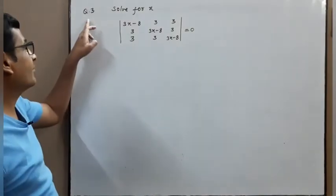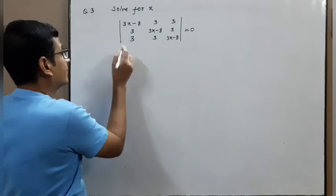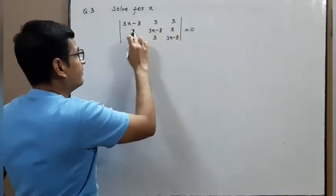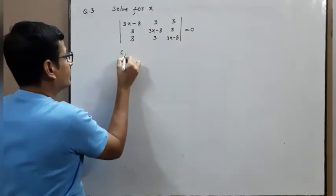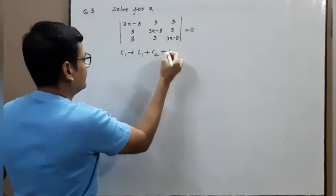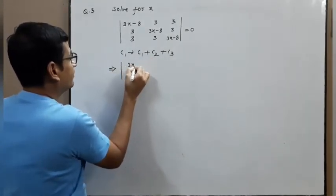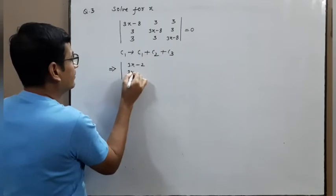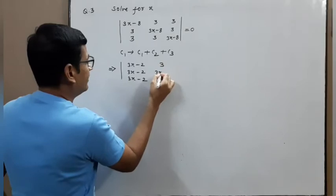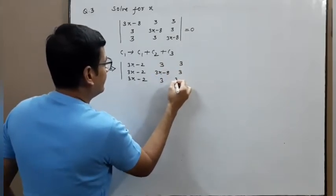Next problem: solve for x. The determinant has entries 3x−8, +3, +3 with symmetry everywhere. So write C1 → C1 + C2 + C3. We get 3x−2, 3x−2, 3x−2 in the first column, then 3, (3x−8), 3 and 3, 3, (3x−8) for the remaining entries.